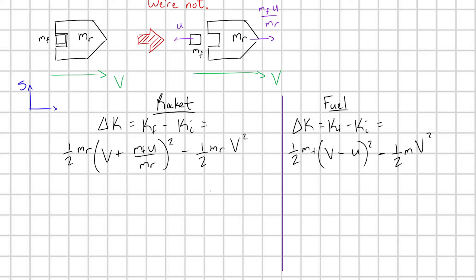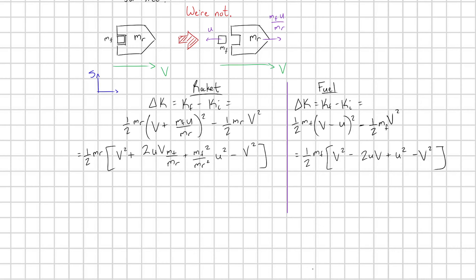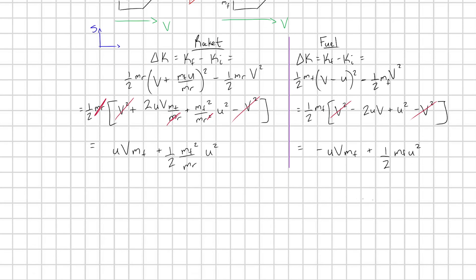Next, let's go ahead and expand out the quadratic terms for the rocket and the fuel. Now expanding things like this, we can see that for the rocket, these V squareds are going to cancel out. And for the fuel, these V squareds are also going to cancel out. And then for the rocket, I'll go ahead and cancel out this MR here with each of these MRs. So excellent. Now we have these really nice expressions for the change in kinetic energy of my rocket and the change in kinetic energy of my fuel.